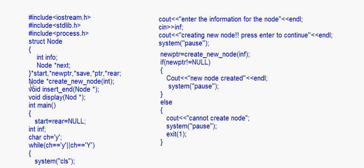These are the prototypes of the functions. Node pointer create new node is the function for creating the new node. Void insert end is the function for inserting at the end of the linked list, in which we pass a node pointer and address. Void display takes a node pointer. In the main method, initially the linked list is empty so start is equal to rear is equal to null.